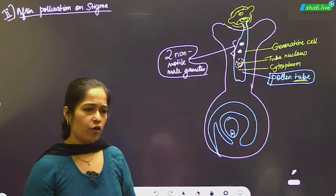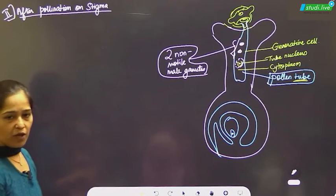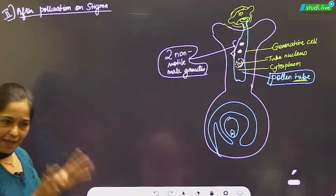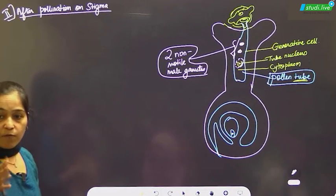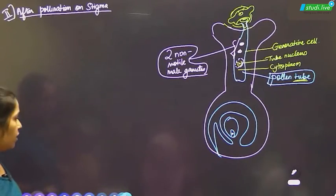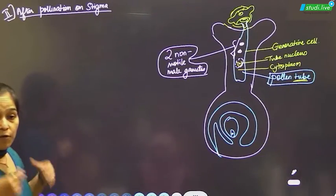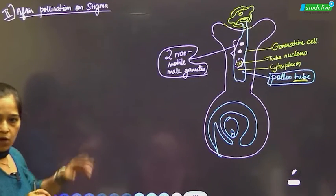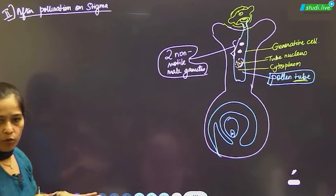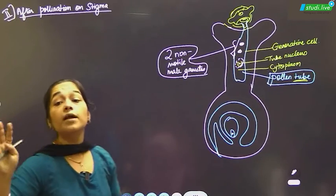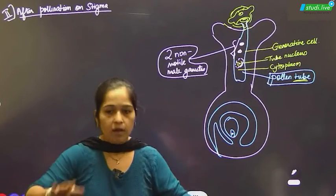The pollen tube carrying two non-motile male gametes and a degenerating sterile tube nucleus represents the development of the male gametophyte. It is a highly reduced structure. In the exam, you may be asked to draw individual diagrams: two-celled pollen grain, germinating pollen grain, male gametophyte, or all four for development of male gametophyte.